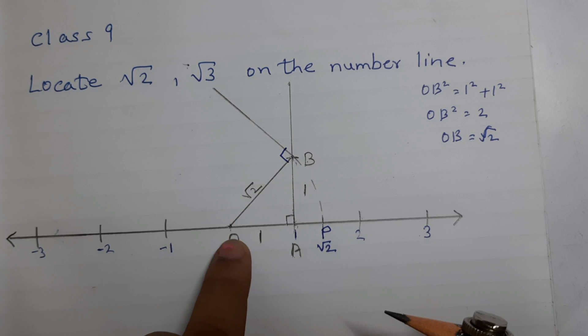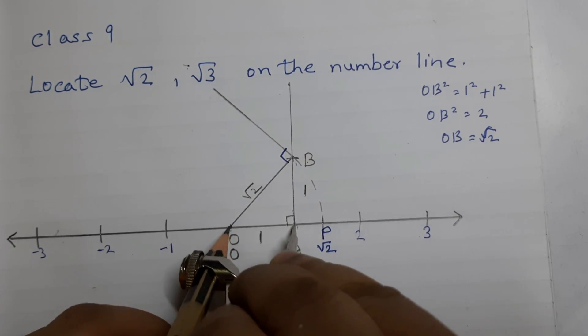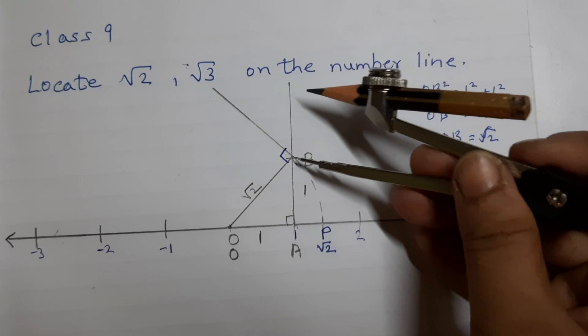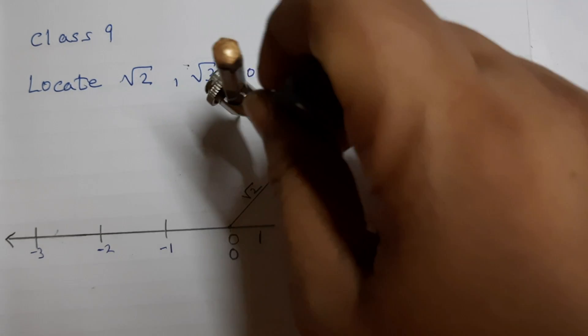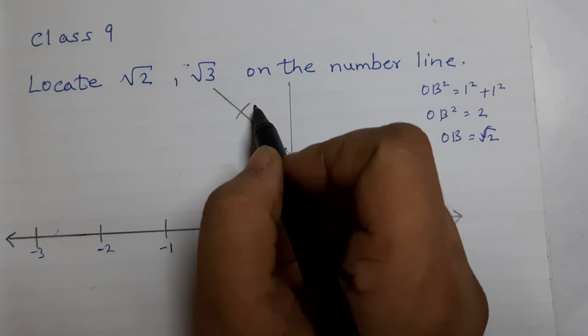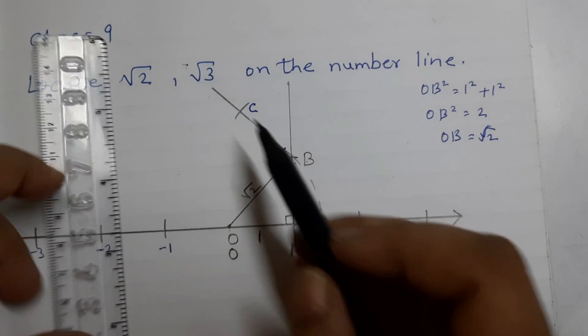Take the same measurement, 0 to 1. Keep the metal point at B and draw an arc. Let's say this is C. Join O, C.